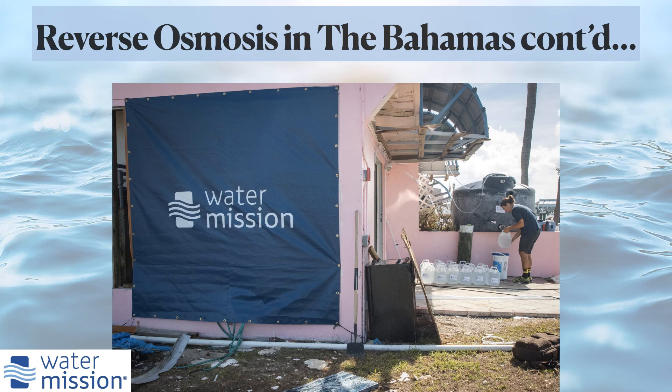In Marsh Harbour, Abaco, Water Mission has a large osmosis system producing more than 30,000 gallons of safe water daily. There are also four smaller RO systems collectively producing an additional 2,000 gallons of safe water daily.